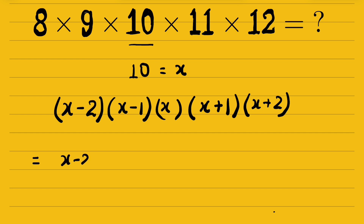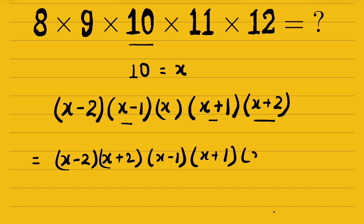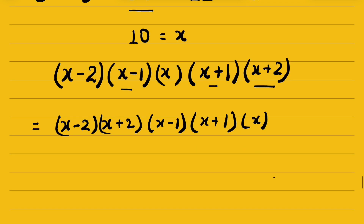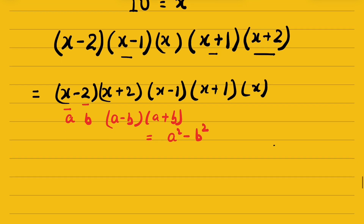Now let's rearrange it and write it as (x minus 2)(x plus 2) times (x minus 1)(x plus 1) times x. If x is a and 2 is b, then this is in the form of (a minus b)(a plus b), which is an algebraic expression we can write as a squared minus b squared.